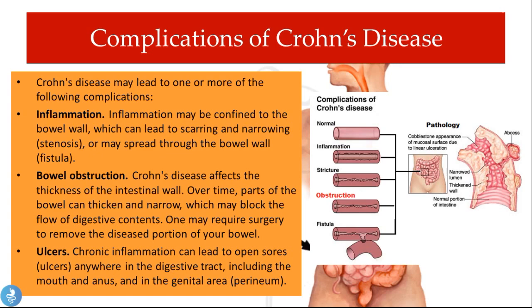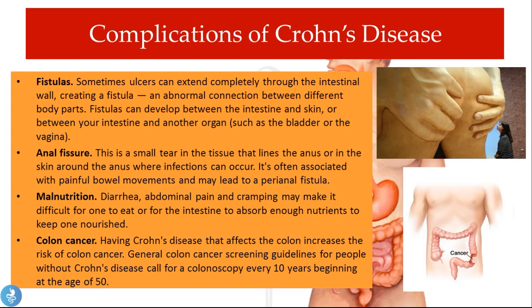Fistulas can develop between the intestine and the skin, or between the intestine and another organ such as the bladder or vagina. An anal fissure is a small tear in the tissue lining the anus where infections can occur, often associated with painful bowel movements and potentially leading to a perianal fistula. Malnutrition results from diarrhea, abdominal pain, and cramping making it difficult to eat or absorb enough nutrients. Colon cancer risk is increased when Crohn's disease affects the colon; while general screening calls for colonoscopy every 10 years starting at age 50, people with Crohn's disease require screening much more frequently, mainly every two to five years.